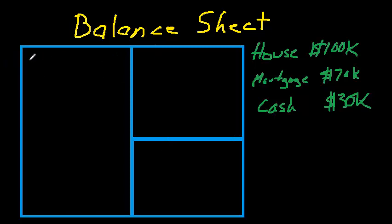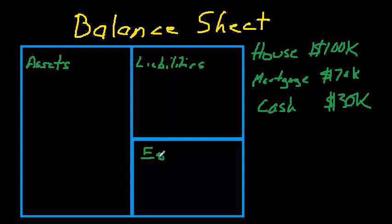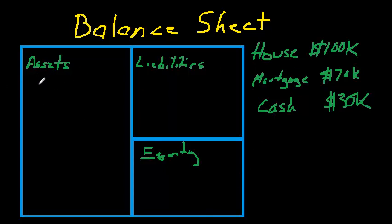There are three sections of the balance sheet. The first is called assets. The second section is called liabilities. And the third section is called equity — or for a company, we might call this stockholders' equity or shareholders' equity. Now let's make your entries into your balance sheet. As the name implies, the entries that we make must balance out. The columns have to sum to the same total, so your assets have to balance with your liabilities and your equity.